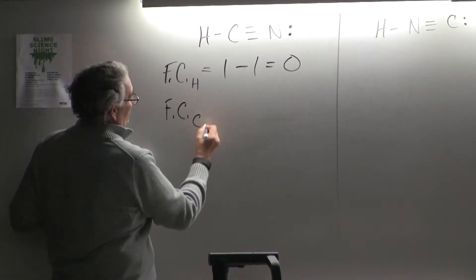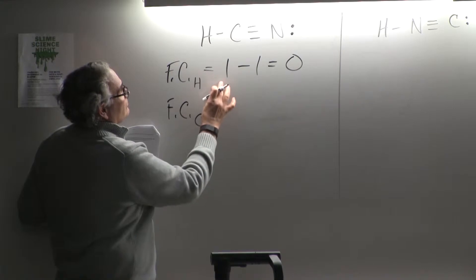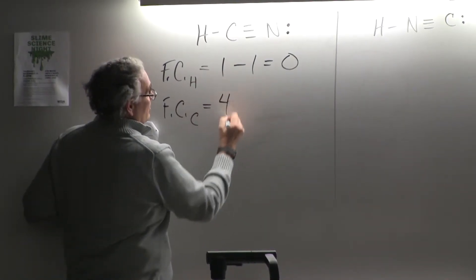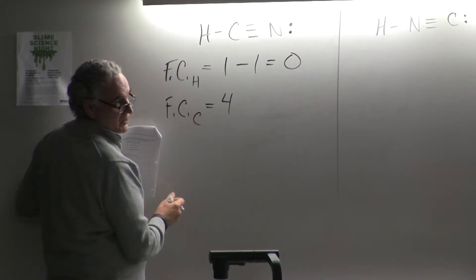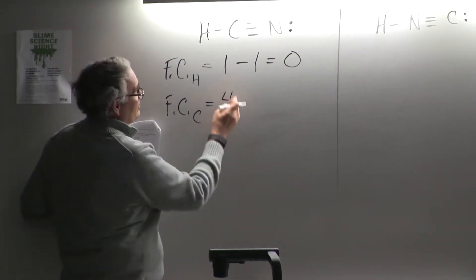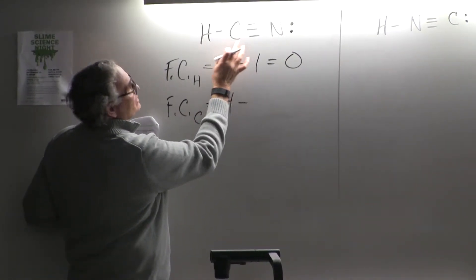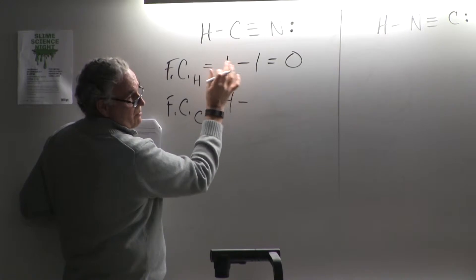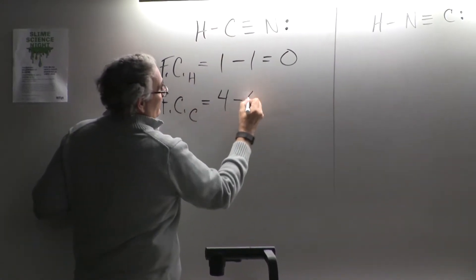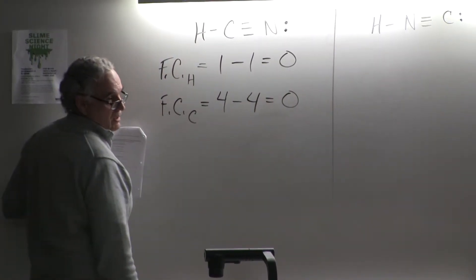Now let's do the formal charge of the carbon. Carbon is in group 4, or group 14 if you're using that model. For counting purposes for valence electrons, carbon has 4. Let's count how many electrons around the carbon came from the carbon — one in each of the bonds, so that would be 4. The formal charge on the carbon is also zero.